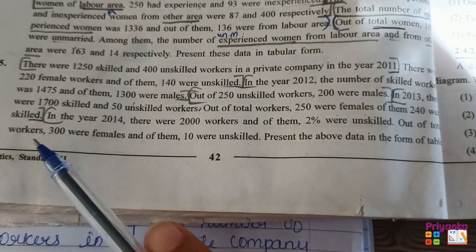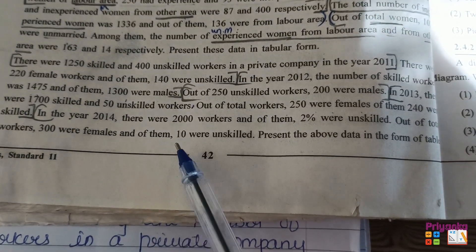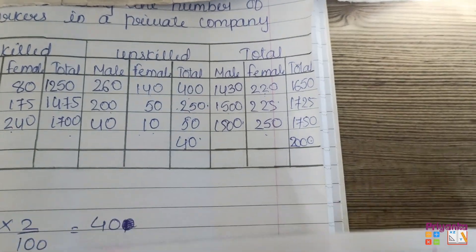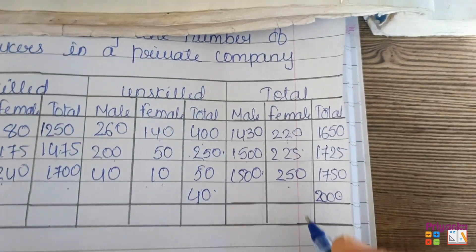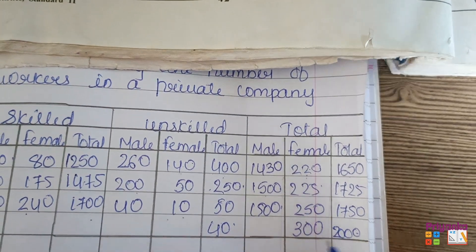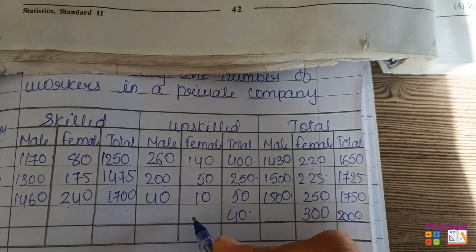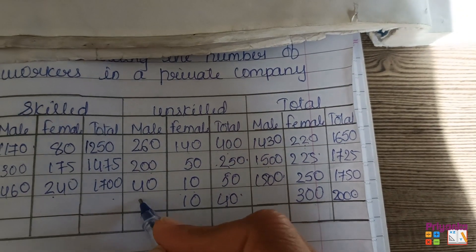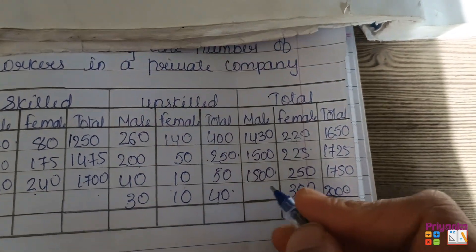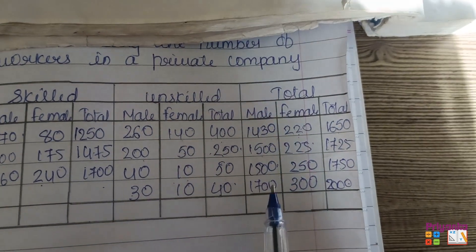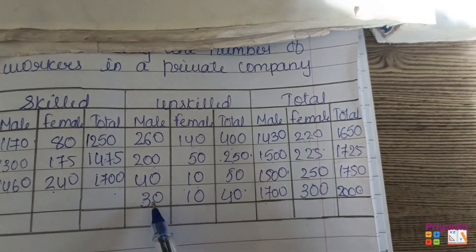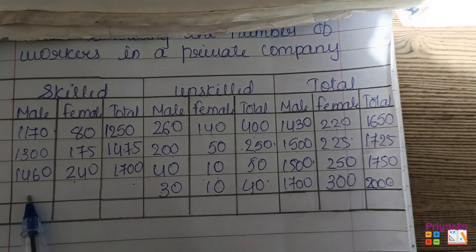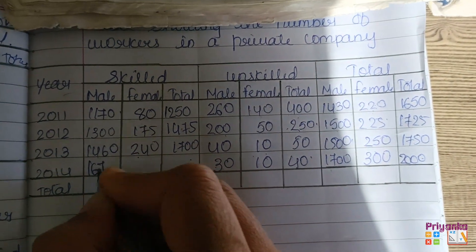Out of the total workers, 300 were female and of them, 10 were unskilled. They are talking about the total number of females being 300. So we write down the total females as 300, out of which 10 were unskilled. Subtracting gives us the unskilled males as 30. Similarly, that gives 1700 total males. Out of this, the unskilled males subtracted gives the total number of skilled male workers in 2014, which is 1670.